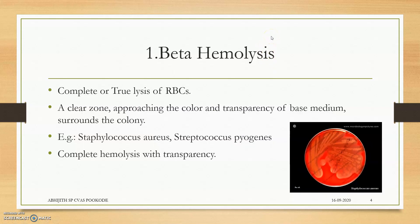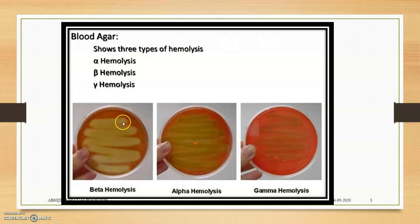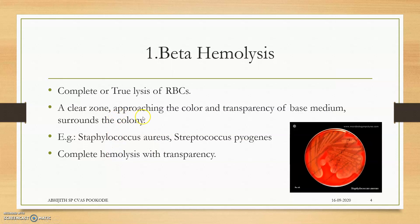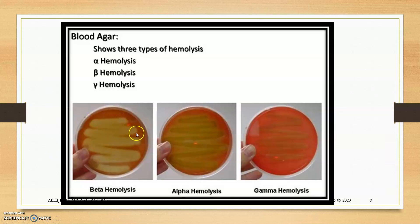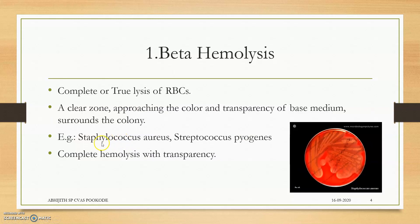Beta hemolysis is the complete or true lysis of RBCs — that is, the RBC is completely broken down. A clear, transparent zone surrounds the colony, approaching the color and transparency of the base medium. Examples of bacteria showing beta hemolysis are Staphylococcus aureus and Streptococcus pyogenes. Complete hemolysis with full transparency is the hallmark of beta hemolysis.